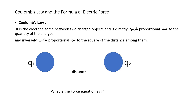Coulomb's law: it is the force between two charges and is directly proportional to the quantity of the charges — that means by increasing the first, the second will increase. And inversely proportional to the square of the distance between them — that means the distance, commonly written as r, is between these two charges. Inversely means by increasing the distance the force will decrease, and the reverse.